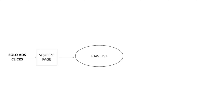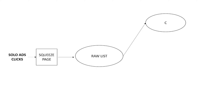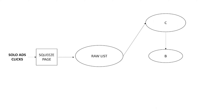Let me explain how the entire Solo Ads process works versus the paid ads process. When you purchase Solo Ads clicks, you direct them to a squeeze page to start building what I call the raw email list. With this raw email list, you promote low-ticket offers to form your buyer's list C; from buyer's list C, you promote mid-ticket offers to form buyer's list B; and from buyer's list B, you promote high-ticket offers to form buyer's list A. From the Solo Ads clicks all the way to the raw list, this is literally just a numbers game — the more budget you have, the more you can play with these numbers.